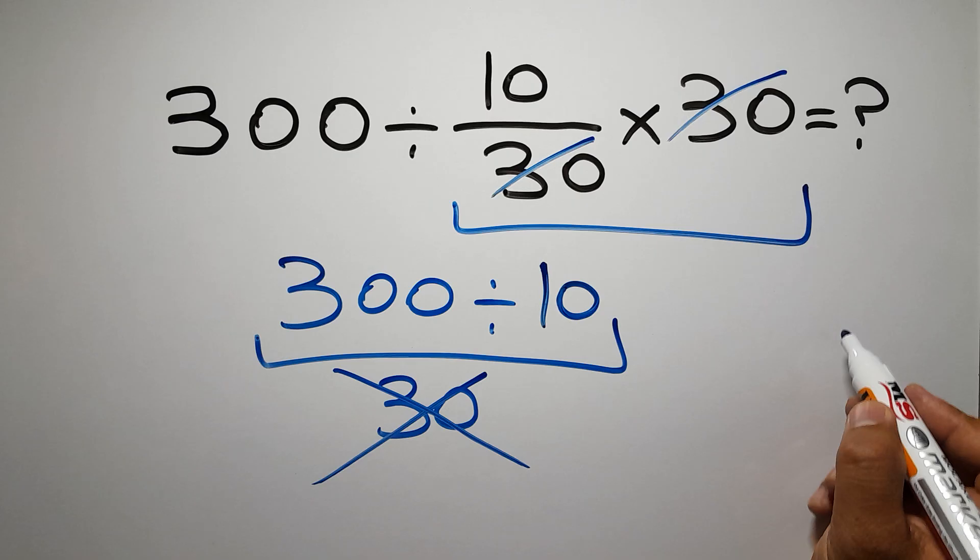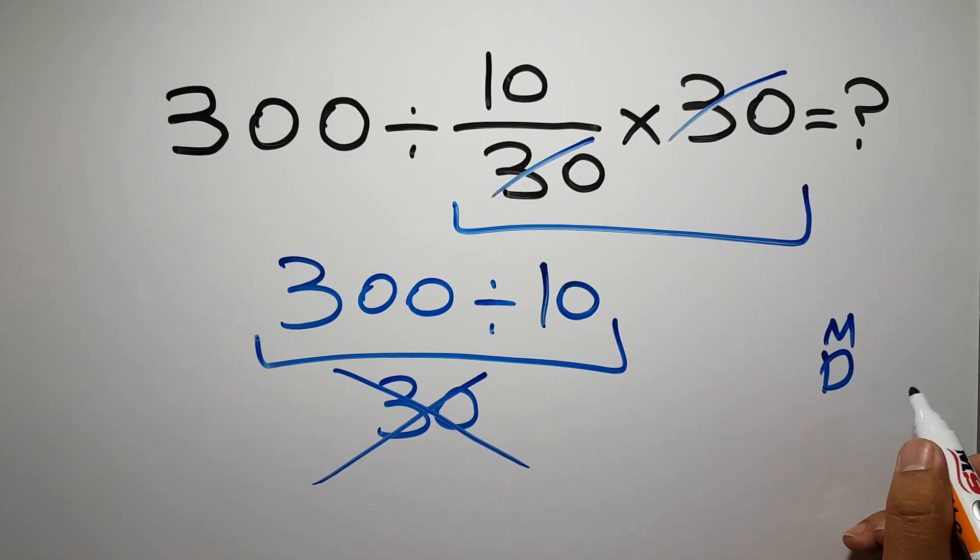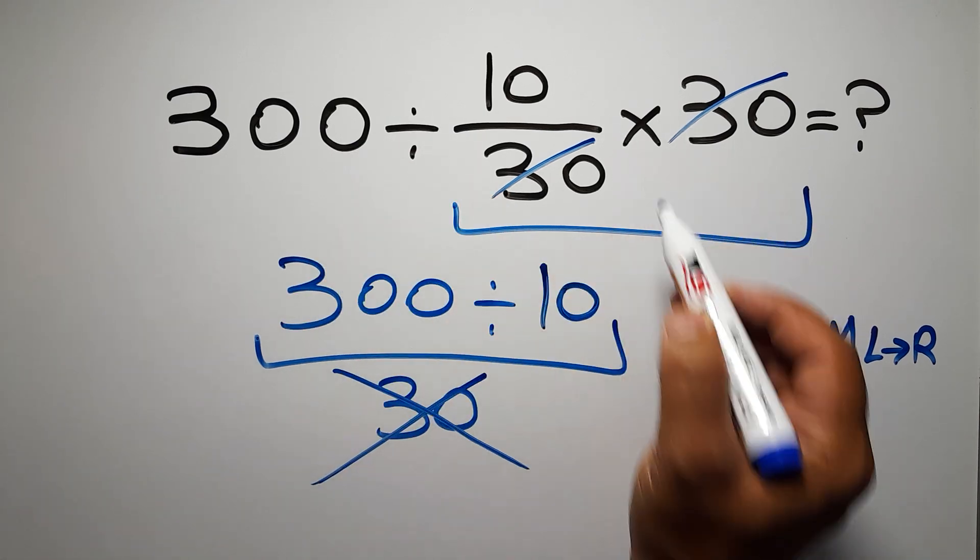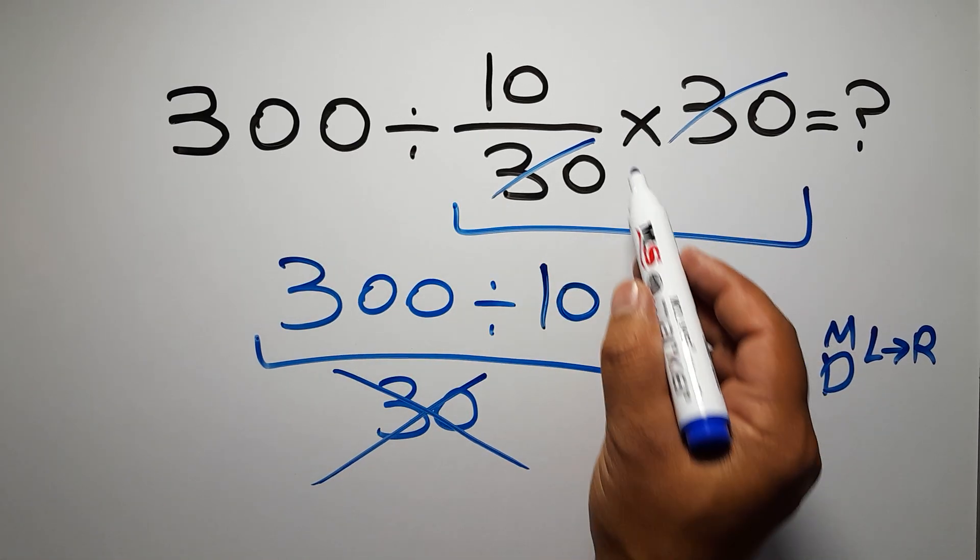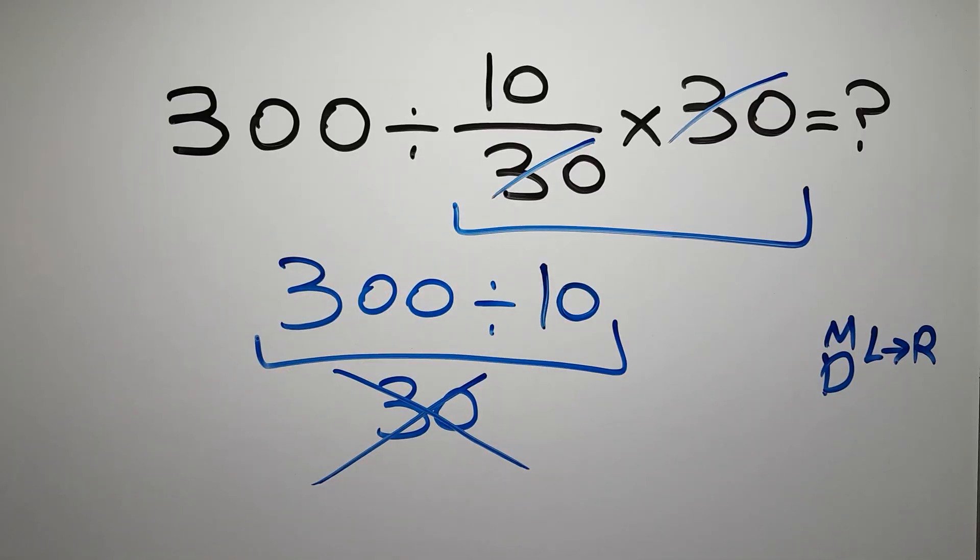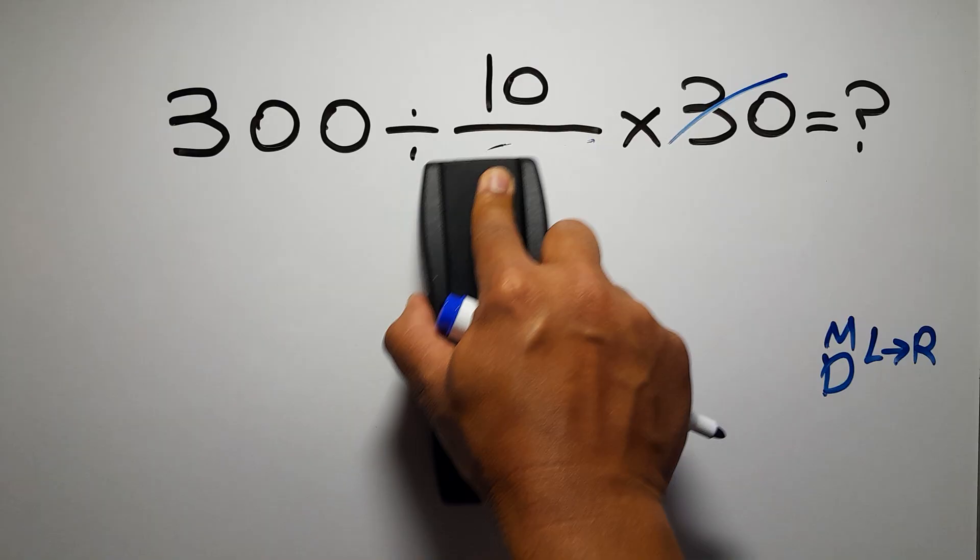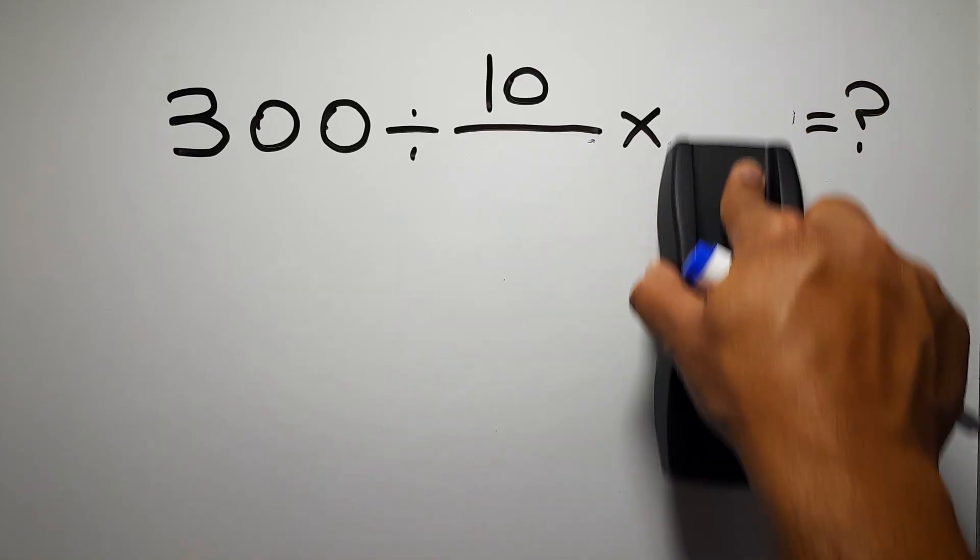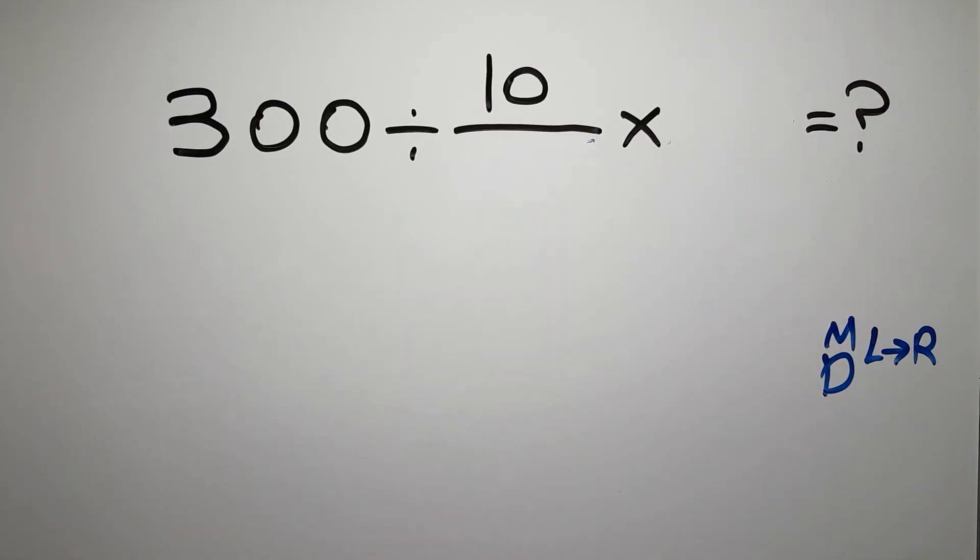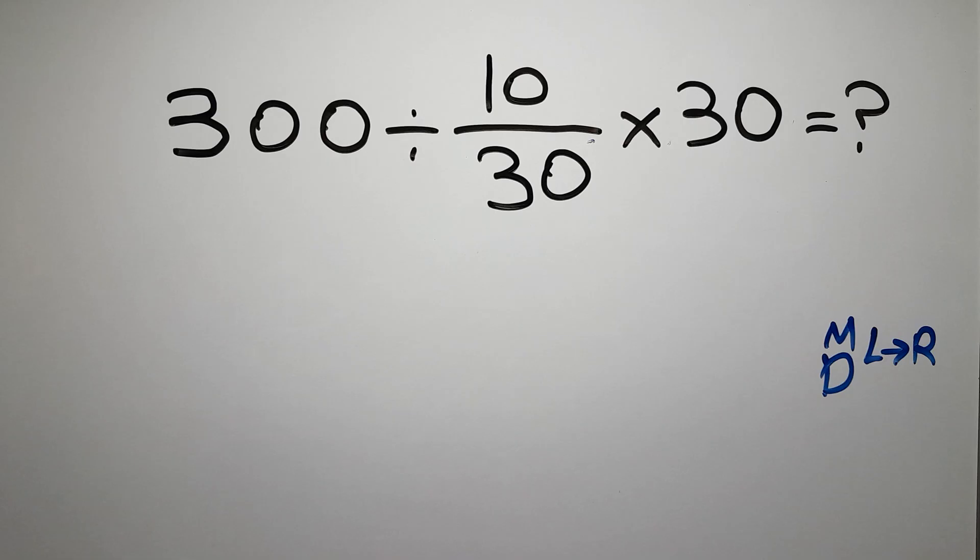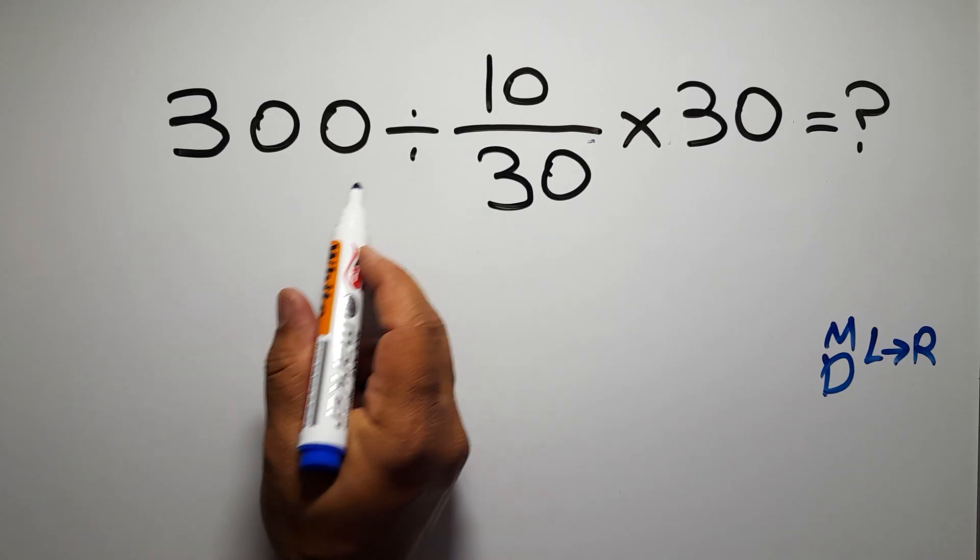Multiplication and division have equal priority and we have to work from left to right. So here first we have to do this division, not this multiplication. If you do this multiplication before this division it is wrong. Okay, so first this division.